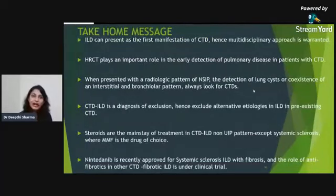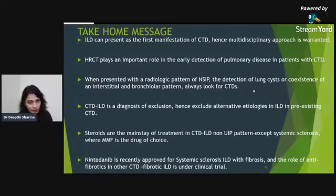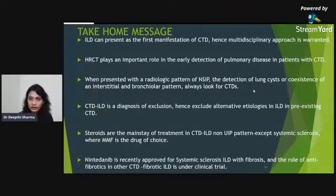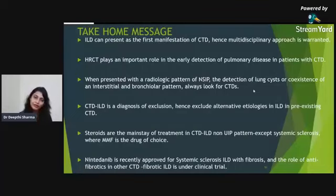The take-home messages of today's webinar: ILD can be the first manifestation of CTD, so a multidisciplinary approach is always warranted. HRCT plays a very important role in early detection and is used as a screening method. When NSIP pattern, lung cysts, or coexistence of interstitial and bronchial patterns are detected radiologically, always look for CTD. CTD-ILD diagnosis is a diagnosis of exclusion — rule out all other causes before attributing ILD to CTD. Steroid is the mainstay of treatment in CTD-ILD for non-UIP patterns, except in systemic sclerosis where MMF is preferred. Nintedanib has been recently approved for systemic sclerosis-associated ILD with fibrosis, and anti-fibrotics have a role in fibrotic CTD-ILDs. Thank you.